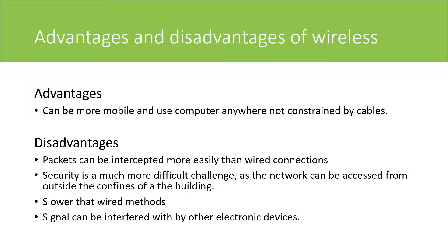The advantages of wireless is that it can be used anywhere, not constrained by cables. The disadvantages of wireless is that packets can be more easily intercepted. Security is a much more difficult challenge as the network can be accessed from outside the confines of a building, for instance. It's slower than wired methods and the signal can be interfered with by other electronic devices.